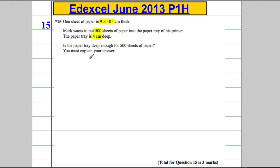Essentially what we want to do here is work out how thick is 500 sheets of paper. Each one is 9 by 10 to the negative 3. So how much in total?